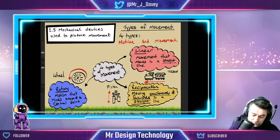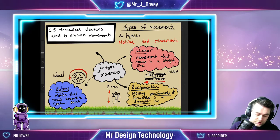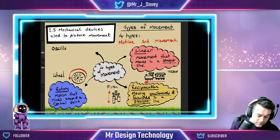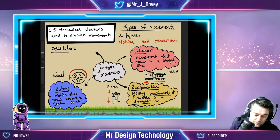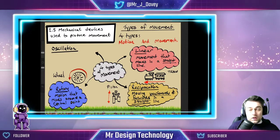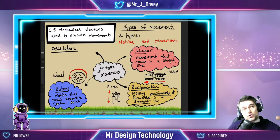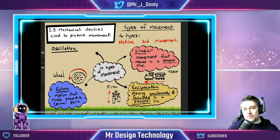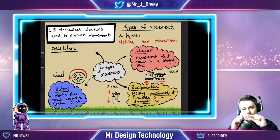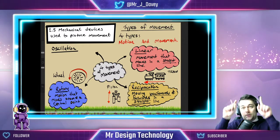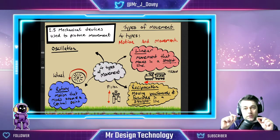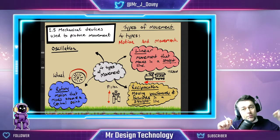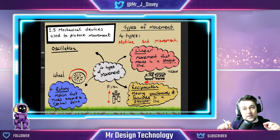Our fourth movement is something called oscillation. Oscillation is a swinging movement — it works on something like a pendulum. You may have seen those devices with five silver balls on a pendulum: you pull one back, it knocks the others, one flies off and swings back up again. That swinging motion is an oscillating movement.